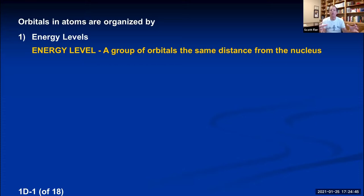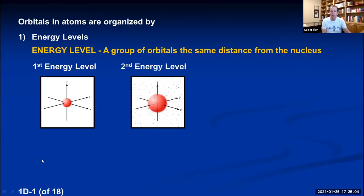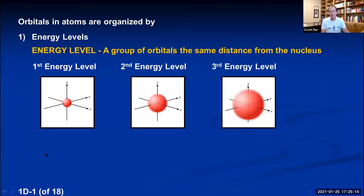If you're in the first energy level, those orbitals are really close to the nucleus, so they're very small. An orbital in the second energy level is bigger because on average an electron is further from the nucleus. An orbital in the third energy level would be even bigger, and we could continue this as far as we want. All orbitals in an atom can be broken up by how far they are from the nucleus: first, second, third, fourth energy level, etc.